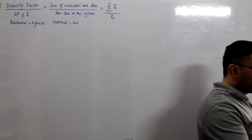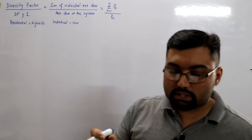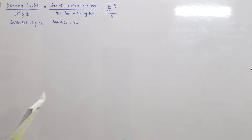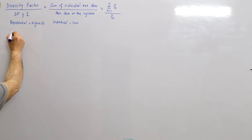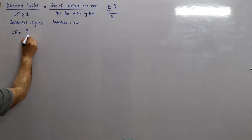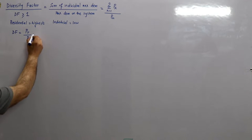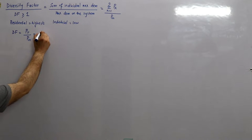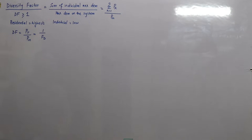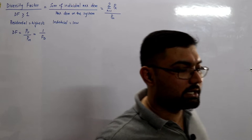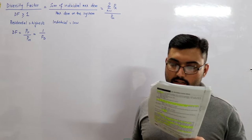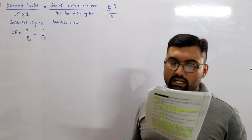The diversity factor is also defined as the installed capacity — or connected load — to the maximum demand ratio, which is the reciprocal of the demand factor.